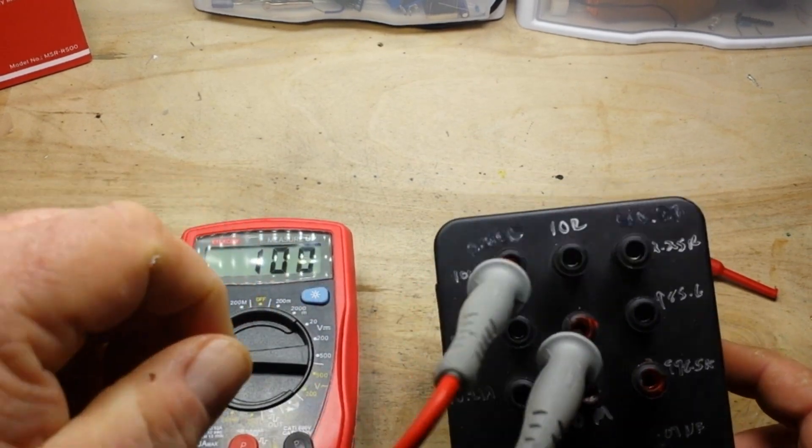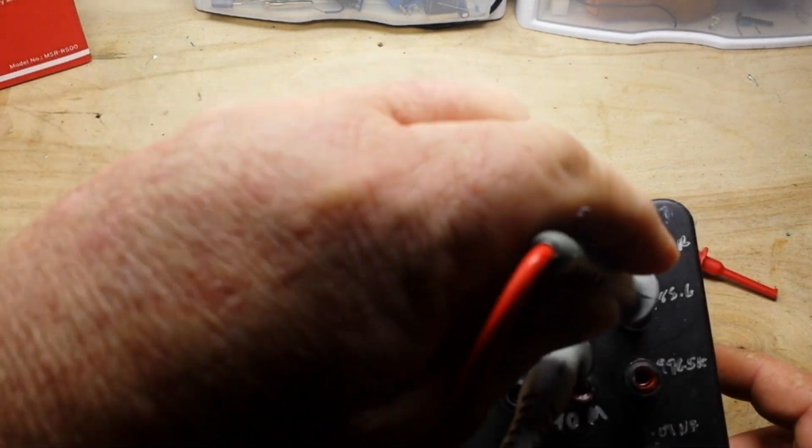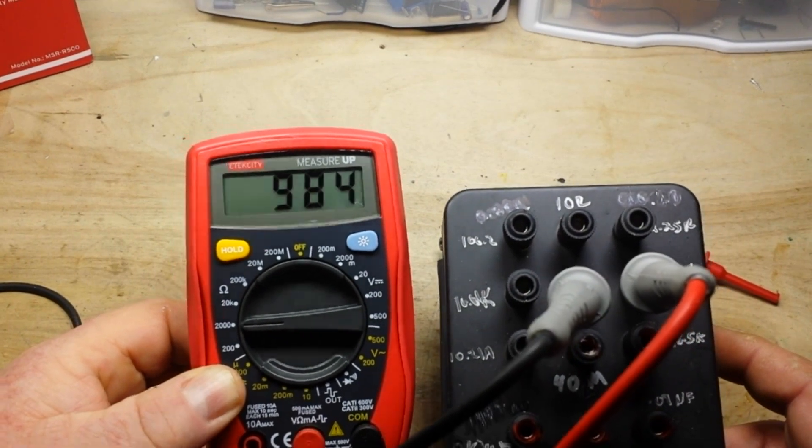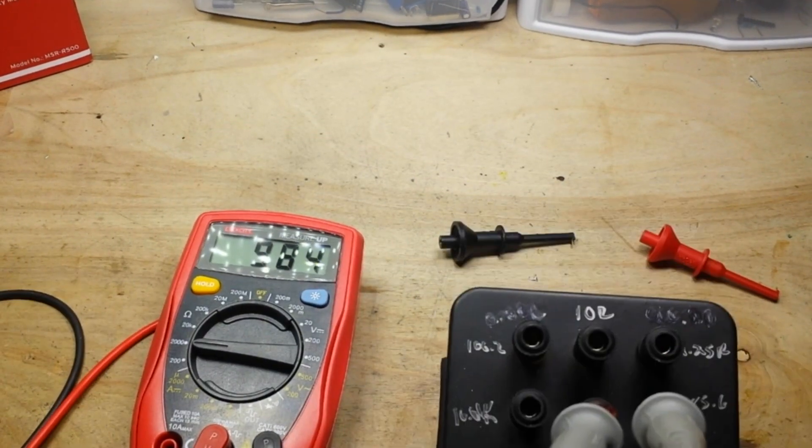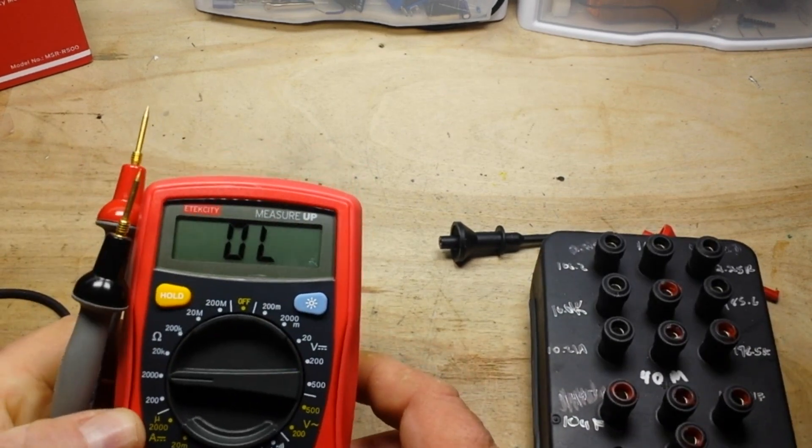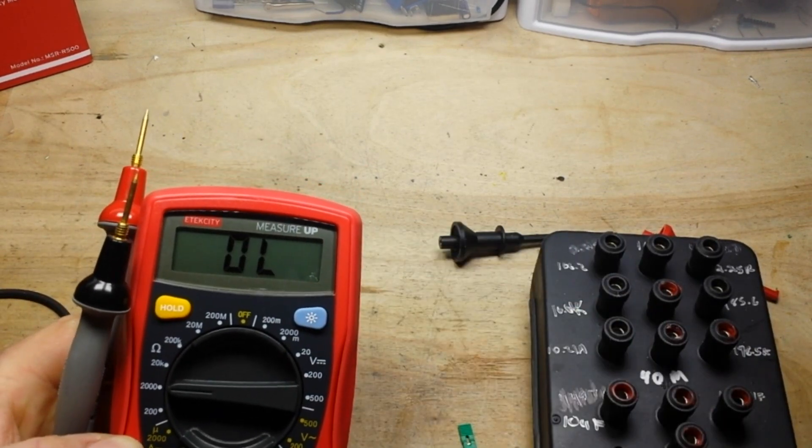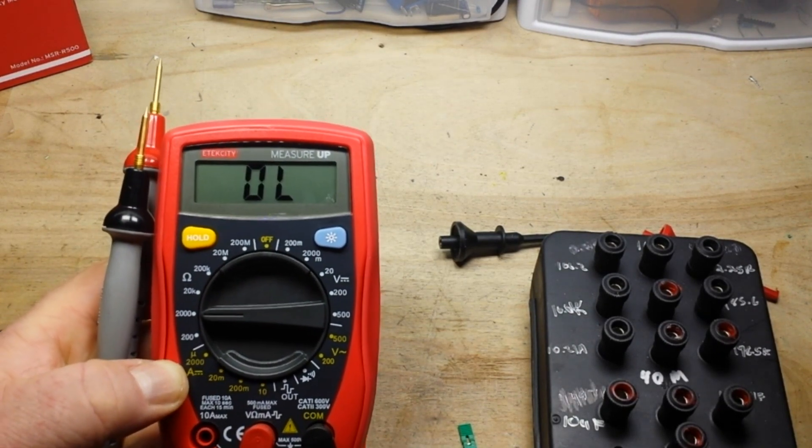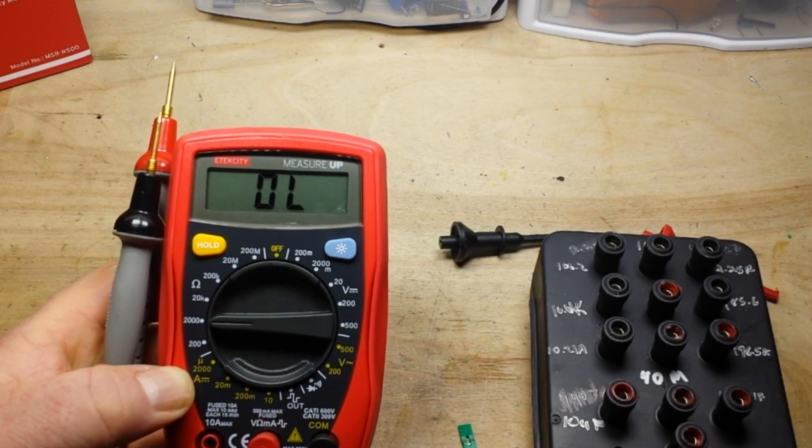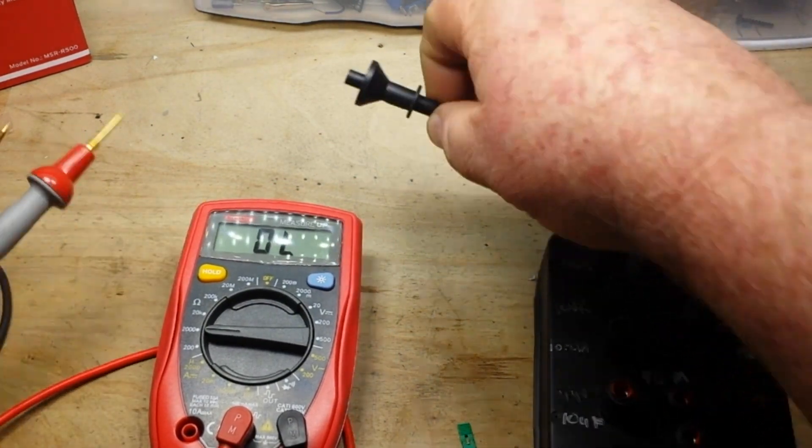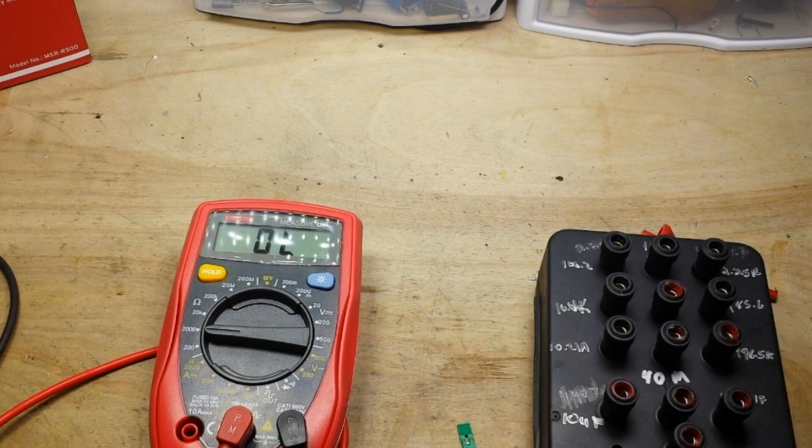Let's take it up to 2,000. This should be 985. Yeah. All right, let's check some capacitance. Does it do capacitance? I don't believe it does. Let me check the book. Nope, it doesn't do capacitance. That's okay.